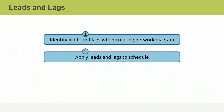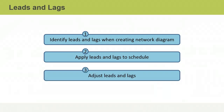You apply specific leads and lags in terms of dates to the schedule once you've identified the project's critical path and estimated its start and finish dates. Finally, once you've applied all the other scheduling techniques and a draft schedule is complete, you adjust leads and lags by going back over them and changing them as necessary to ensure the schedule is viable.